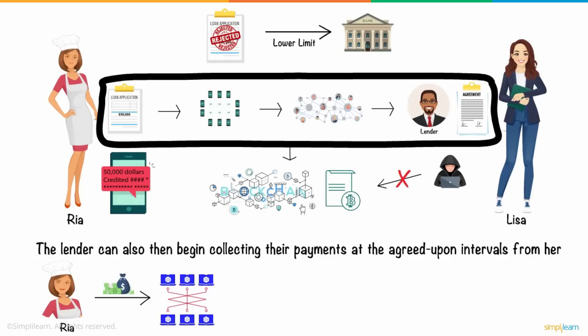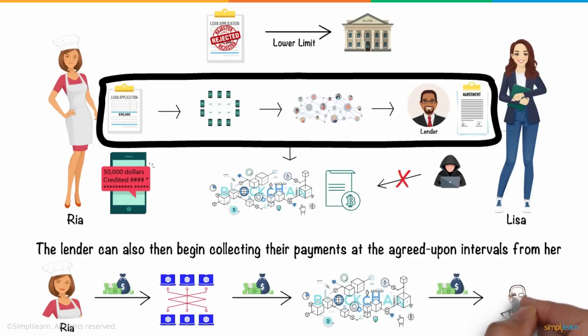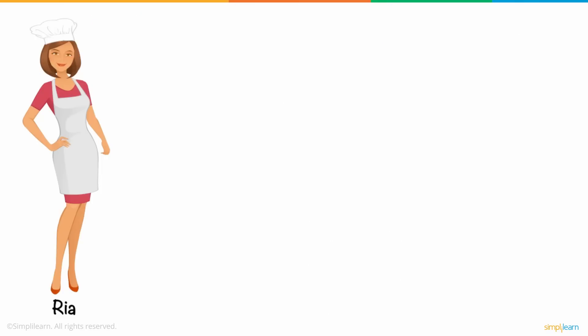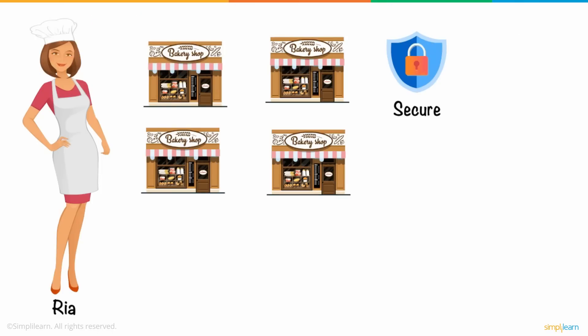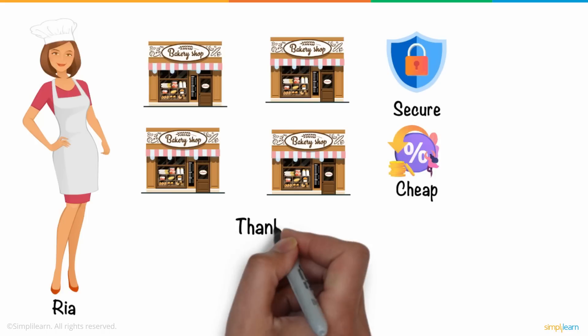When she makes the payment using her dApp, it goes through the same blockchain process, and the money is transferred to the lender. Ria was impressed and relieved that she now could grow her business in a much more secure and cheaper way, all thanks to DeFi.